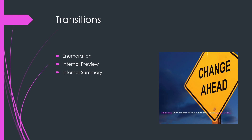Moving on to transitions. There are different types and they are extremely important in a speech. Think of it like this: tell your audience what you're going to tell them, tell them, and tell them what you told them. The preview in the introduction is 'tell them what you're going to tell them'; the body is 'tell them'; and the conclusion is 'tell them what you told them.' In a speech, people can't go back and read, so you have to be somewhat redundant — that's why transitions are so important.